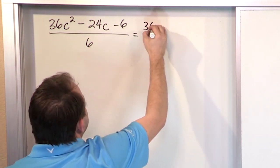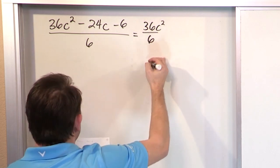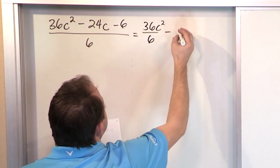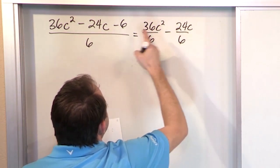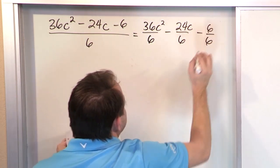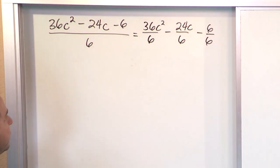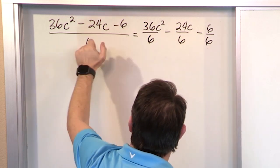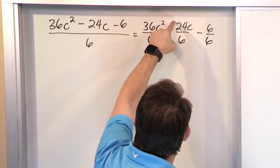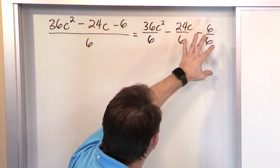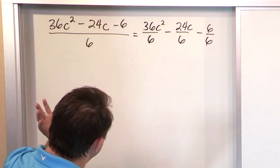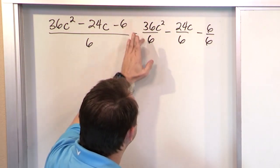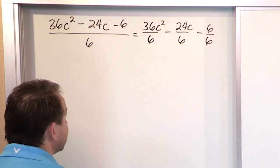So you write it as 36c² divided by 6, then the negative comes along for the ride: minus 24c over 6, and this negative comes along for the ride, minus 6 over 6. If that confuses you, think about going the other direction — combining fractions with a common denominator. You can go back and forth, so this is a simplified form. Now we can divide these numbers and simplify the expression.